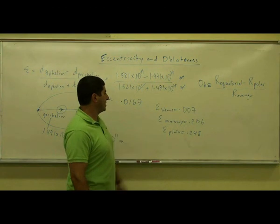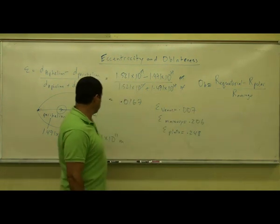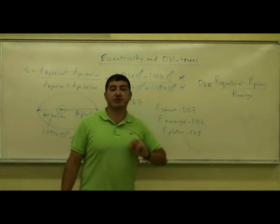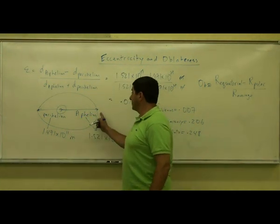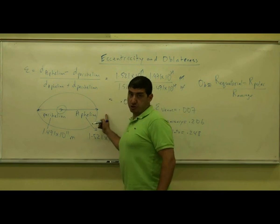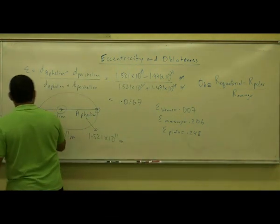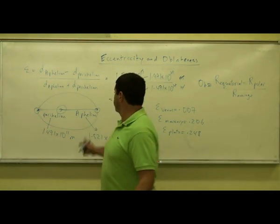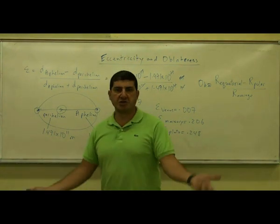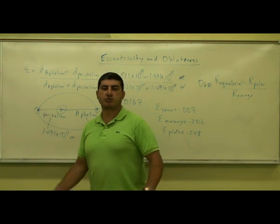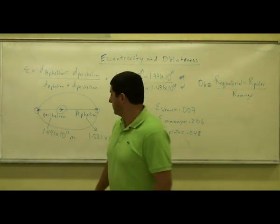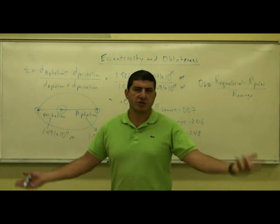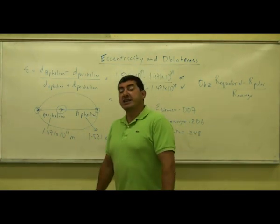Out of the planets, Mercury has the most eccentricity and Venus the least, with Earth somewhere in the middle. Most people are surprised by this question: when does aphelion occur for the Earth, and when does perihelion occur? A lot of people will say Earth reaches aphelion during winter — something like December or January — and perihelion sometime in June, July, or August. It actually ends up being the opposite.